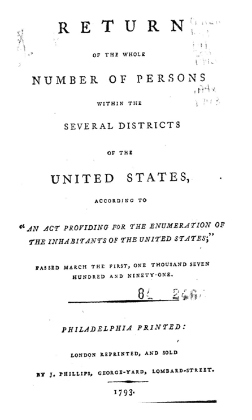The 1950 Census questionnaire removed the word 'Color' from the racial question and also removed Hindu and Korean from the race choices. The 1960 Census re-added the word 'Color' to the racial question and changed 'Indian' to 'American Indian,' as well as added Hawaiian, Part Hawaiian, Aleut, and Eskimo. The 'Other — Print Race' option was removed.